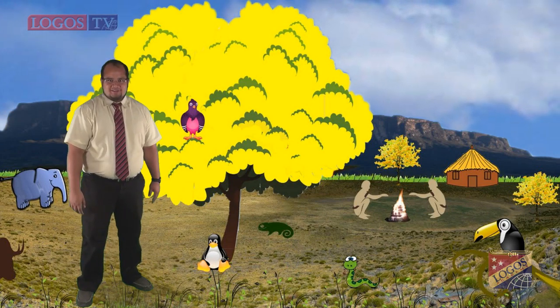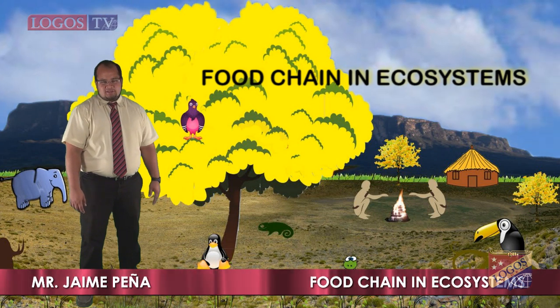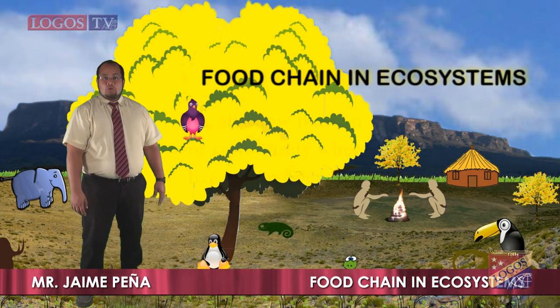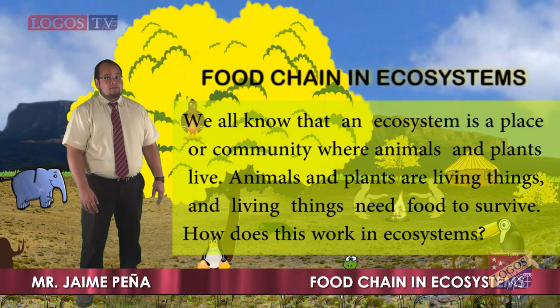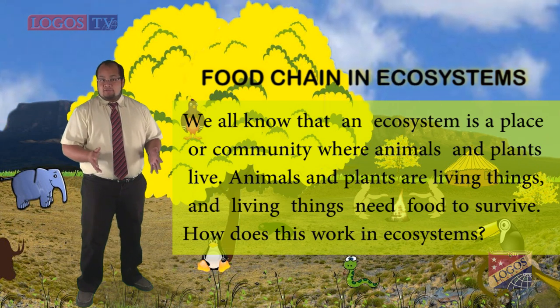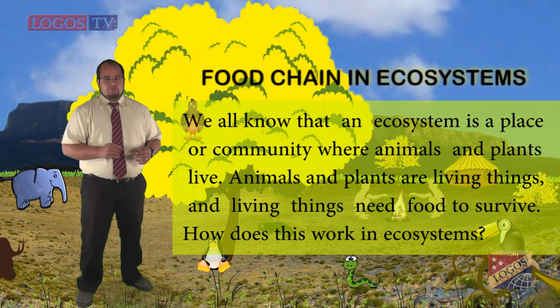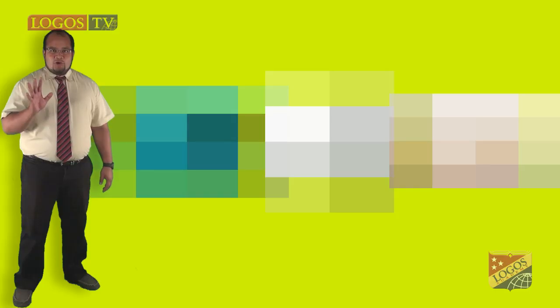Welcome to a new science class. Today we will talk about food chains in ecosystems. We all know that an ecosystem is a place or community where animals and plants live. Animals and plants are living things, and living things need food to survive. How does this work in ecosystems?